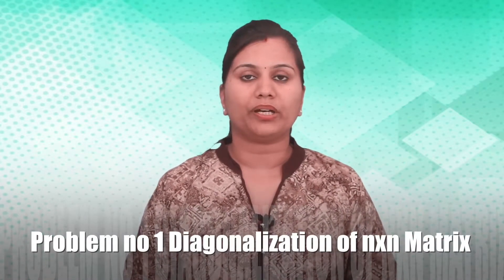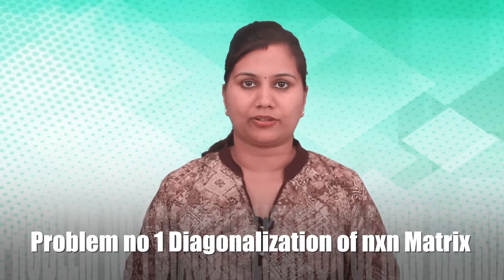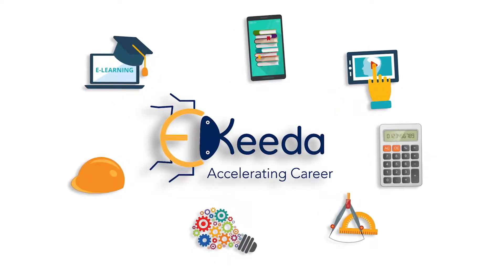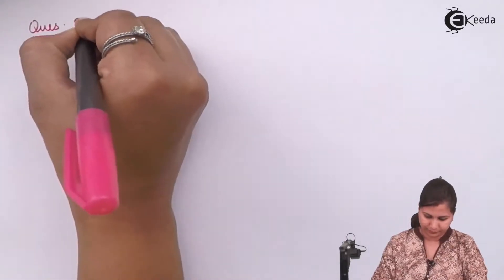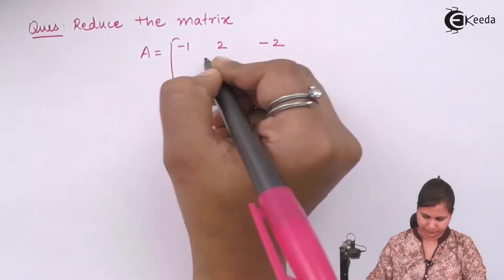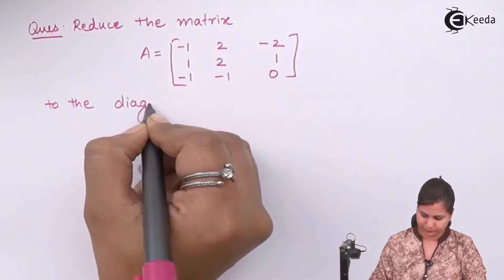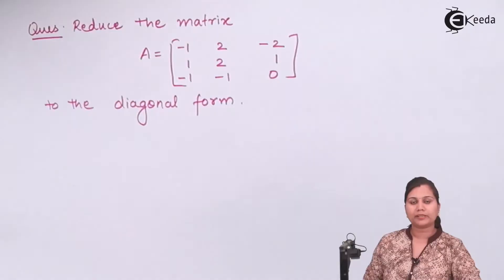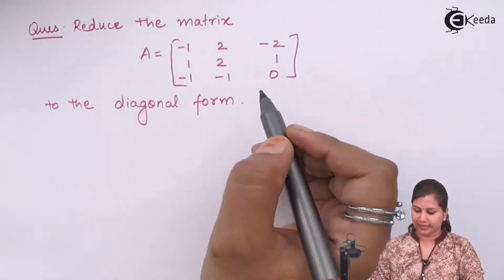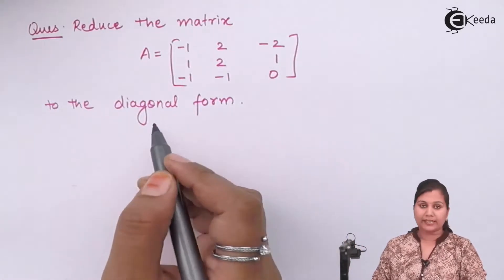Hello friends. In this video we are going to solve a problem on how we can diagonalize an n×n matrix. Our problem is to reduce the matrix A, which is a 3×3 matrix having 3 rows and 3 columns, to the diagonal form.